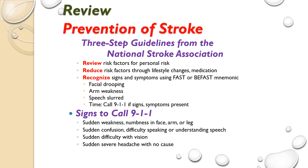To prevent stroke, we want to review the client's risk factors and reduce them through lifestyle changes or medication. We teach clients and their families the FAST or BeFAST mnemonic: facial drooping, arm weakness, slurred speech, and time. Note the time of symptom onset and call 911. Signs to call 911 include sudden weakness or numbness in the face, arm, or leg; sudden confusion; difficulty speaking or understanding speech; sudden difficulty with vision; or a sudden severe headache with no cause.